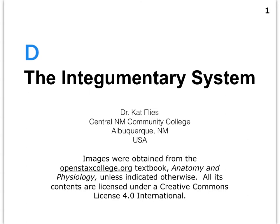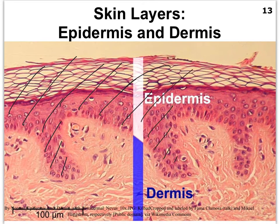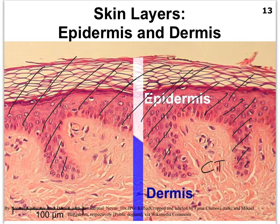Hi, Dr. Kat Fleece here with video D on the integumentary system. We're going to focus this time on the dermis. We've pretty much wrapped up the epidermis and we're moving on to the dermis in this video. Unlike the epidermis, which was all stratified squamous epithelial tissue with melanocytes, Langerhans cells, and Merkel cells, the dermis is all connective tissue, made up of two different types.